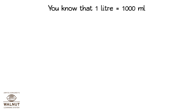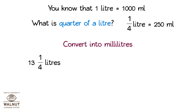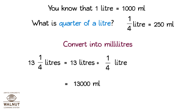You know that 1 litre is equal to 1000 millilitres. What is quarter of a litre? One-fourth litre is equal to 250 millilitres. Convert into millilitres: 13 one-fourth litres is equal to 13,000 mL plus 250 mL = 13,250 millilitres.